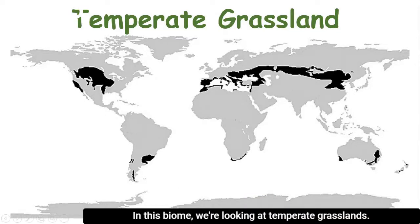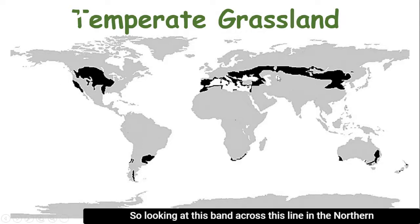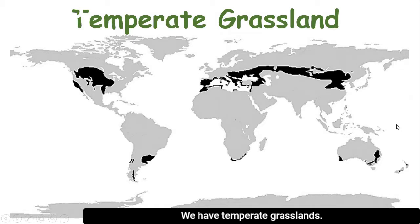In this biome, we're looking at temperate grasslands. So we're in the temperate climate zone, looking at this band across this latitude here in the northern hemisphere, and then this band across here in the southern hemisphere. This is a temperate climate zone, and we have temperate grasslands.